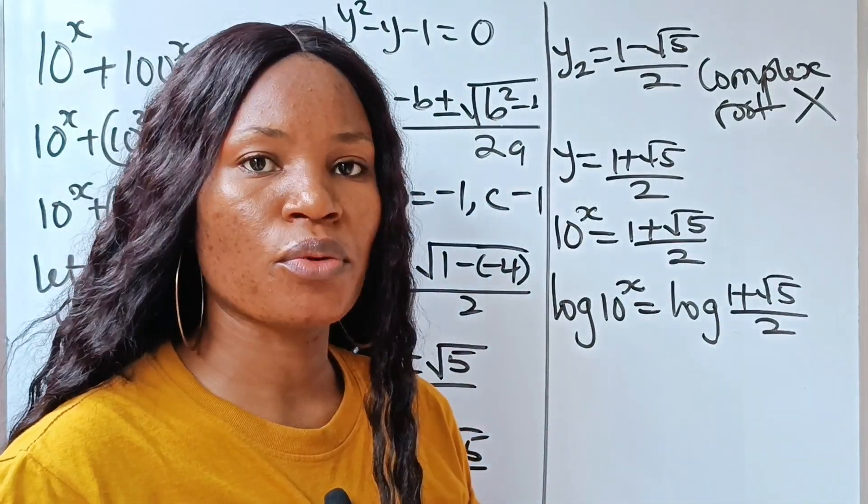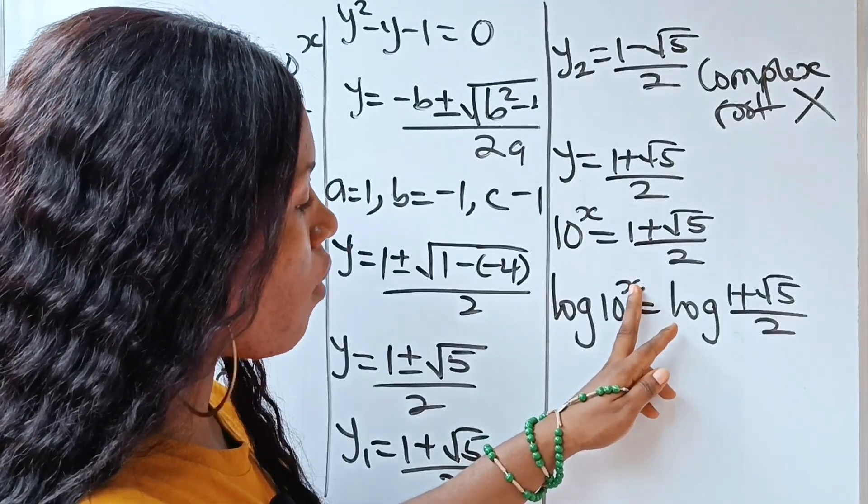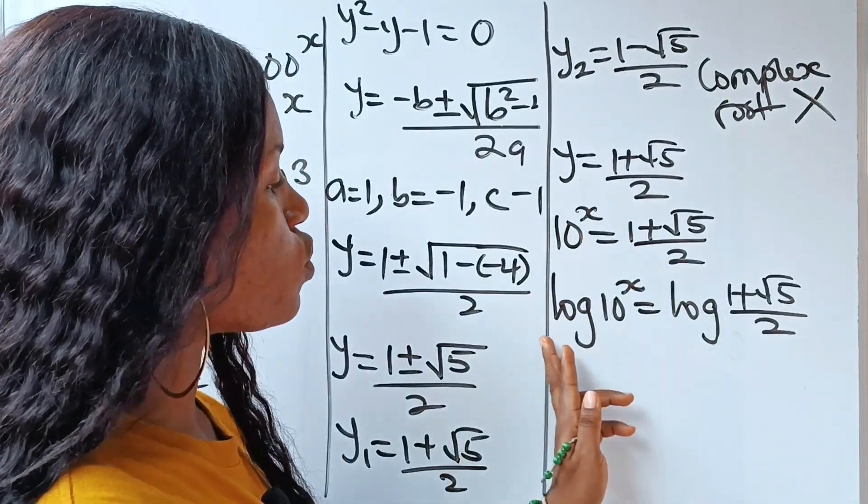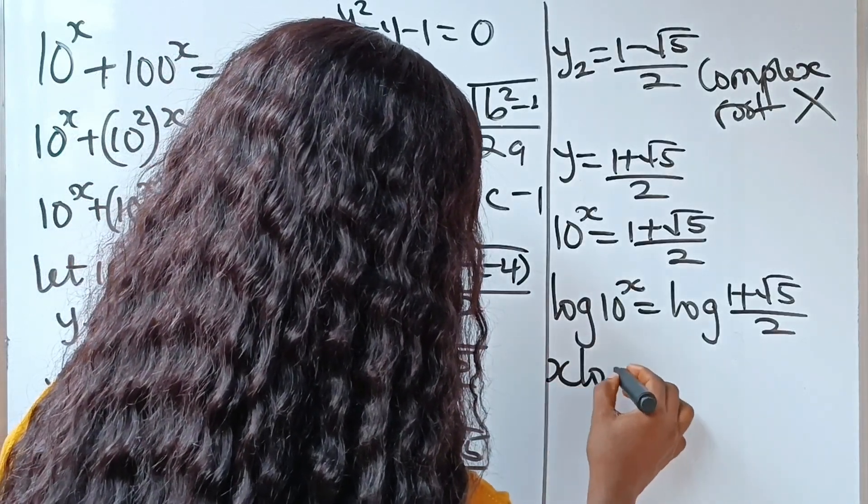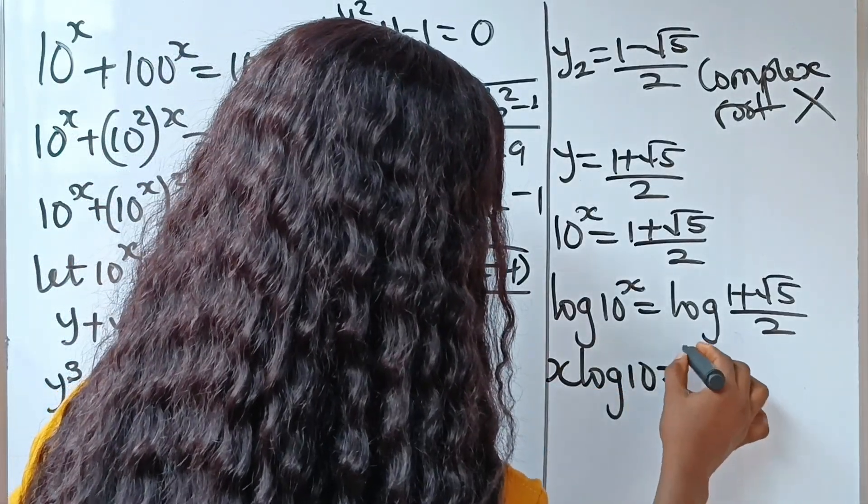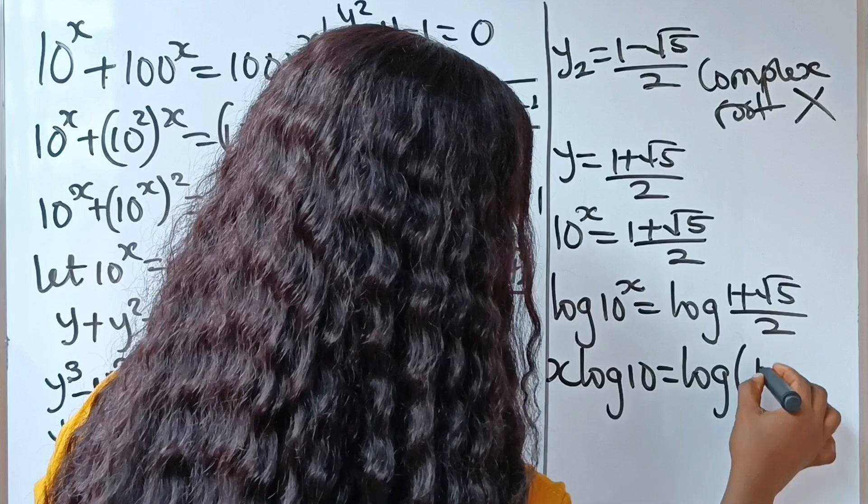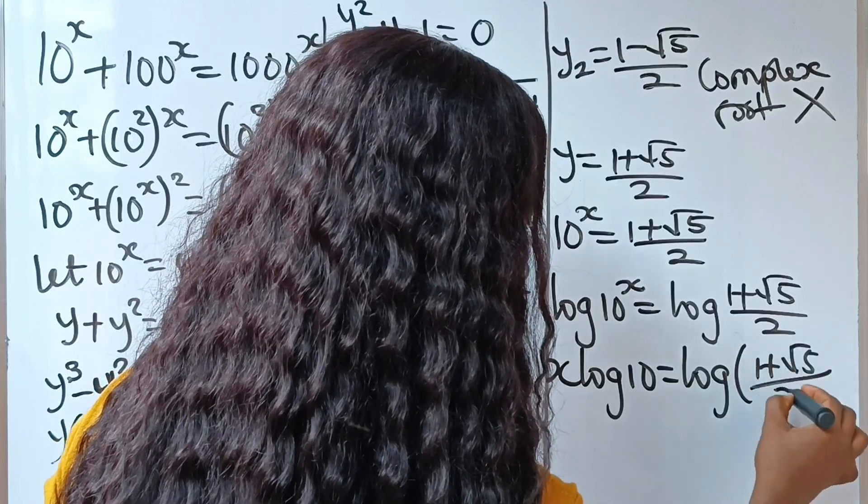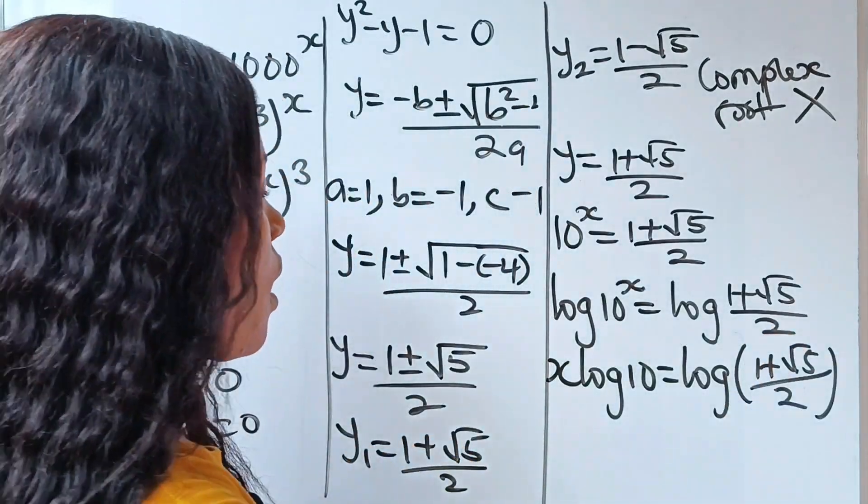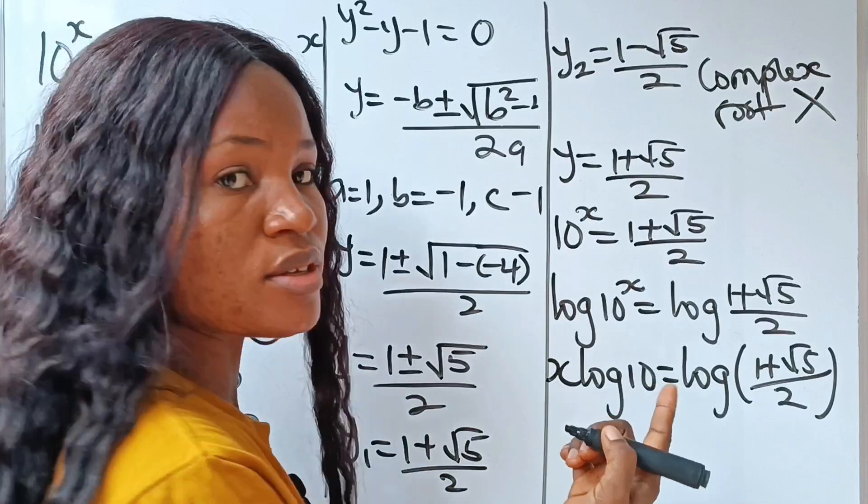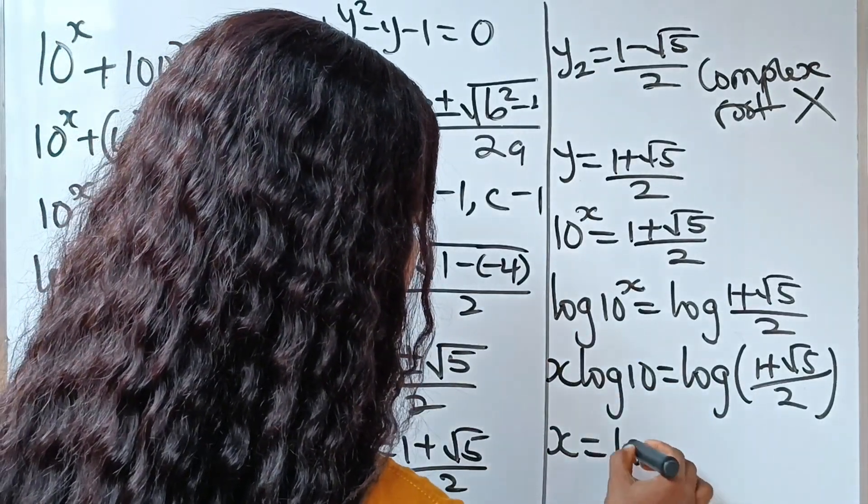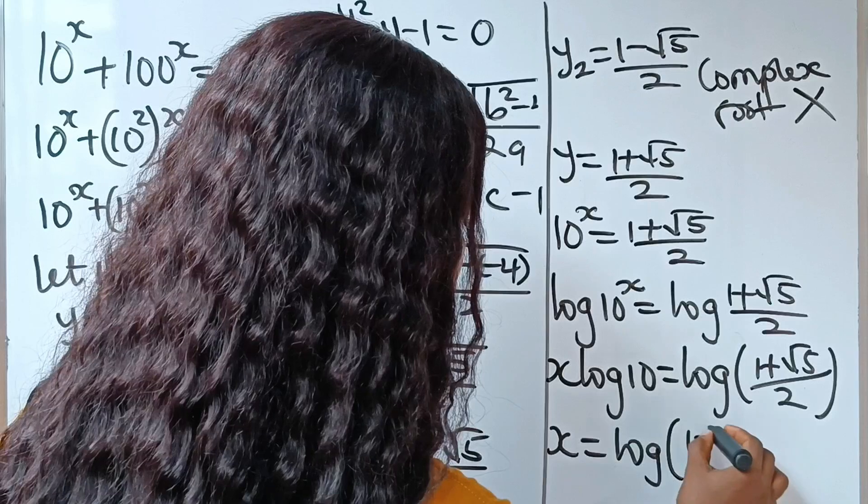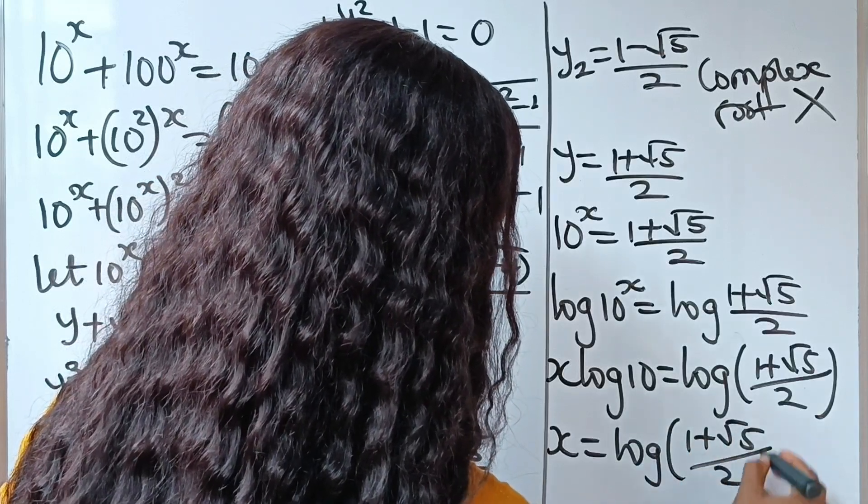Now using the power rule, the power rule states that if you have your power, you can bring down the power to multiply your log. That means we can write this as x multiplied by log 10 is equal to log 1 plus root 5 over 2. Now log 10 is 1. Log to base 10 of 10 is 1. So that simply means that x is log to base 10 of 1 plus root 5 over 2.